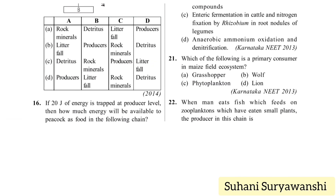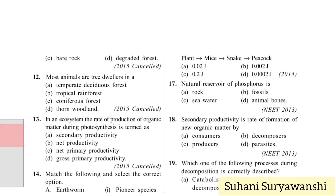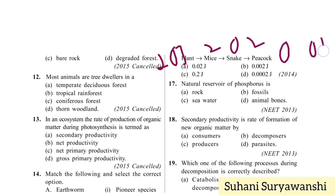If 20 joules of energy is trapped at the producer level, how much energy will be available to a peacock as food in the chain: plants → mice → snake → peacock? Applying the 10% law: 20 joules at plants, 2 joules to mice, 0.2 joules to snake, and 0.02 joules for the peacock. The correct answer will be 0.02 joules.